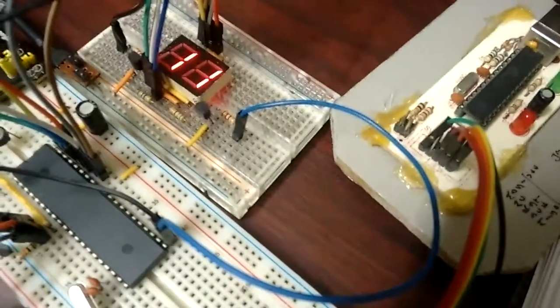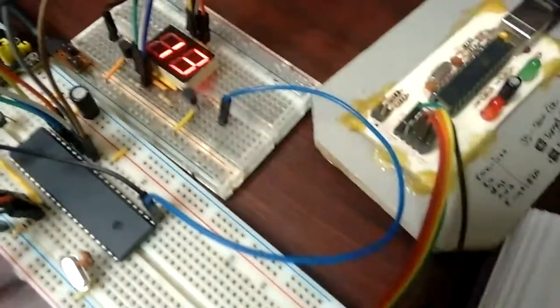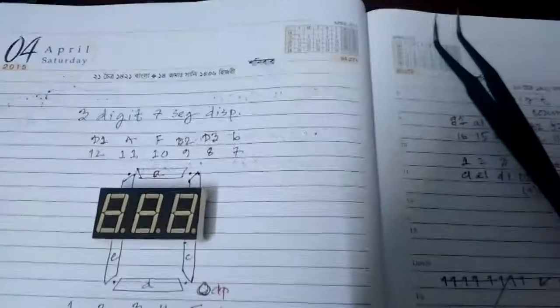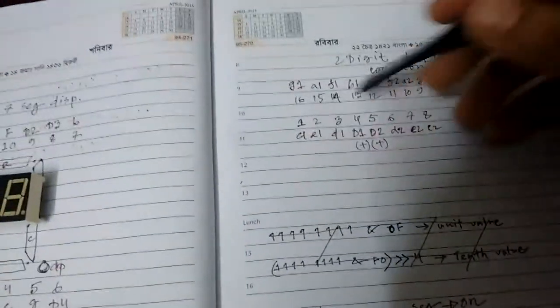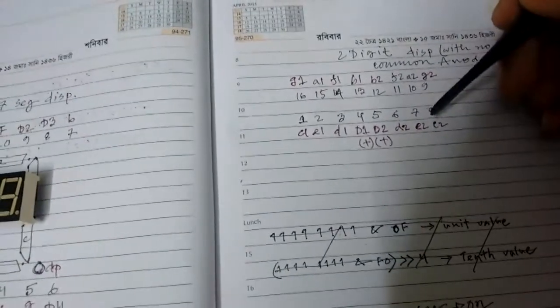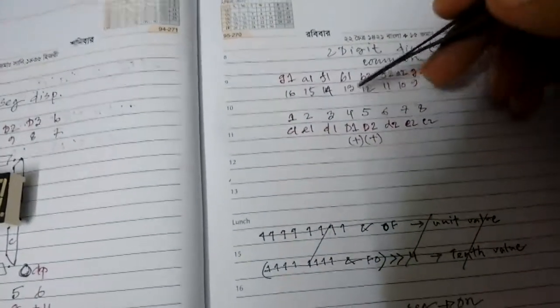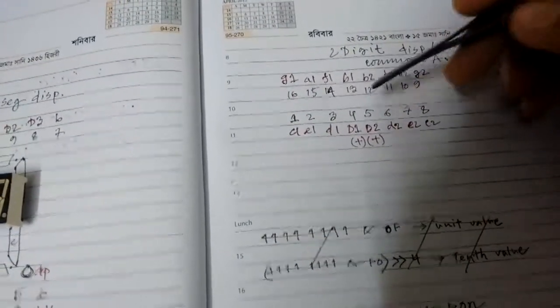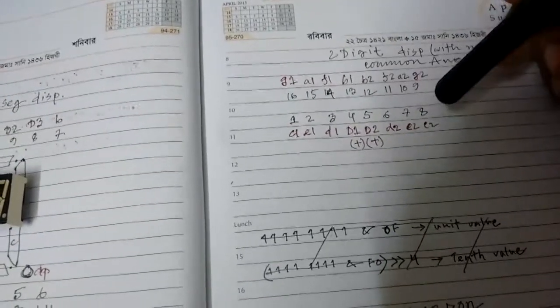Now this I did with multiplexing. What is multiplexing? This is a technique where you switch between the digits so fast that the human eye can't tell that they are being switched.